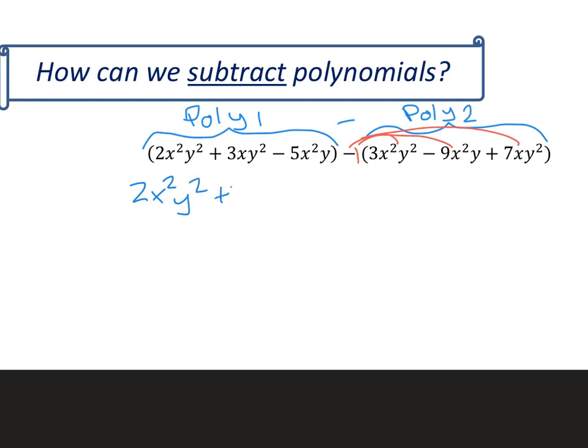So I'm just going to rewrite polynomial 1, dropping the parentheses. But when I break out all the terms from polynomial 2, I need to change every term's sign.